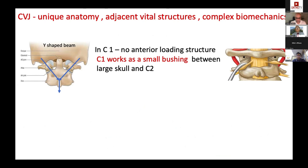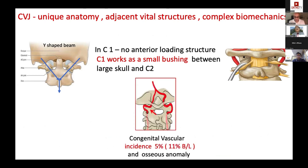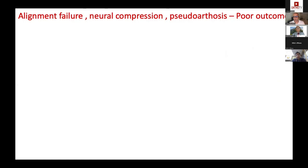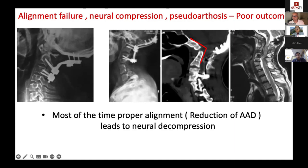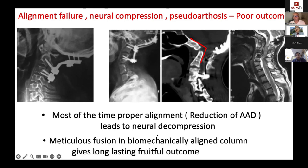The CVJ is a Y-shaped beam where C1 acts as a small bushing. Congenital anomalies of the vertebral artery occur in about 5% unilateral and 11% bilateral cases. These structures can fail with pathology — even after surgery, there may be alignment failure, further neural compression, and deterioration. Proper alignment leads to neural decompression, and meticulous fusion in a biomechanically aligned column gives long-lasting, fruitful outcomes.